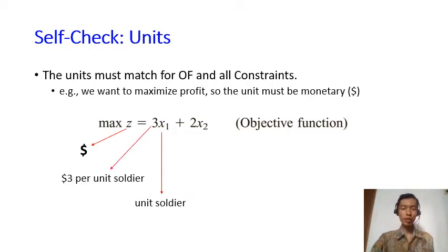From the problem you see that 3 here means 3 dollars per unit soldier. And then you define your x1 as the number of soldiers, so it's also in the unit of soldiers. When you multiply these two, 3 dollars per unit soldier times unit soldier, it becomes dollars in the units.